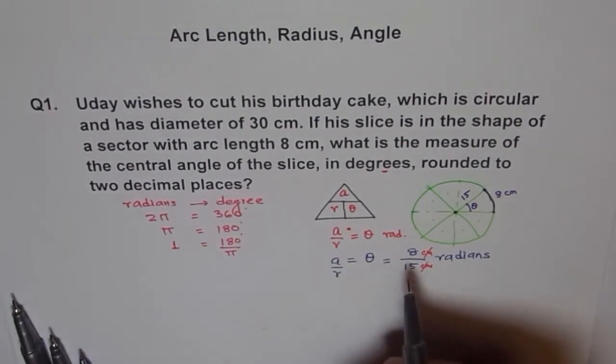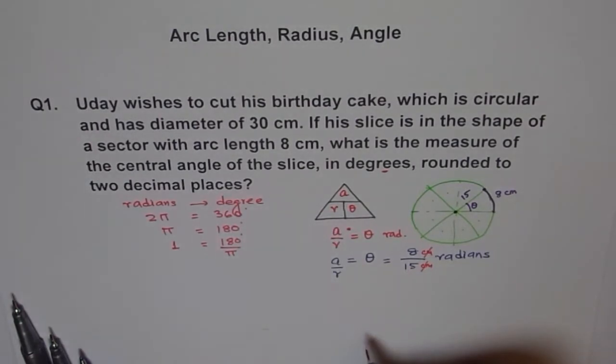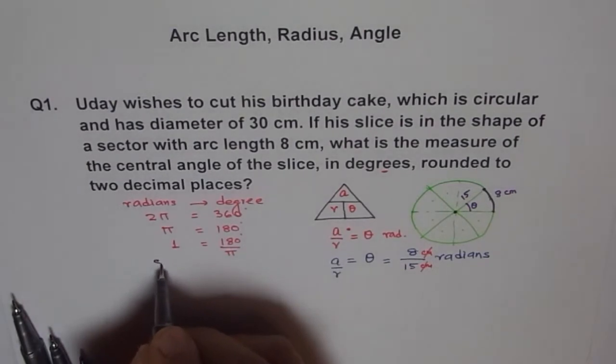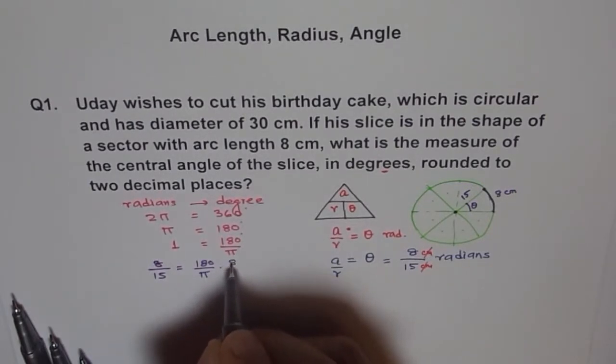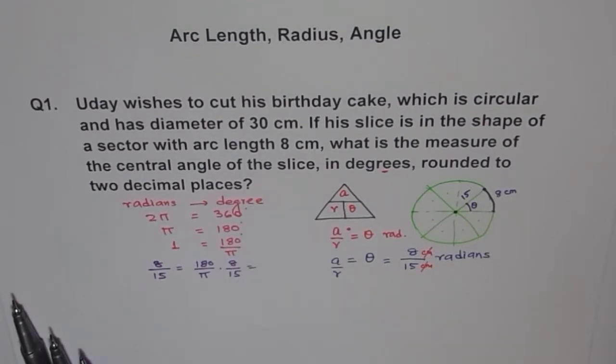Now, we want to know, 8 by 15 radiance is how much? So, we will write now, 8 by 15 radiance is equals to, we will say, 8 over 15 radiance is equals to 180 divided by pi times 8 over 15. And we will calculate this now using our calculator.